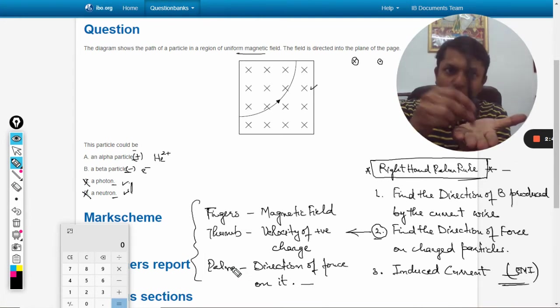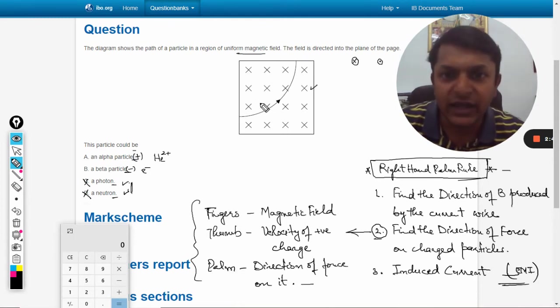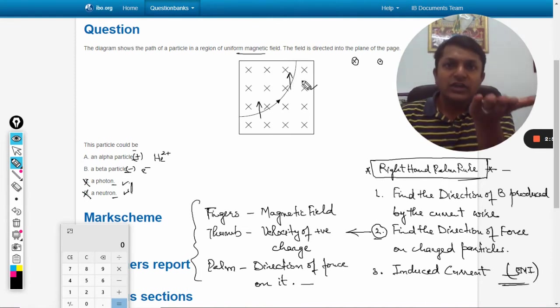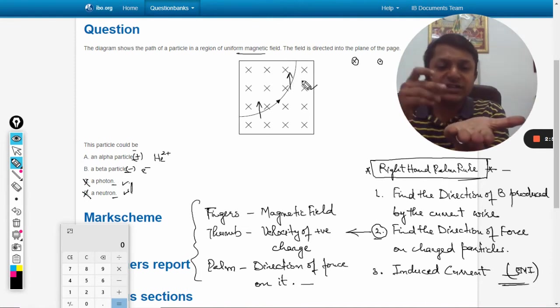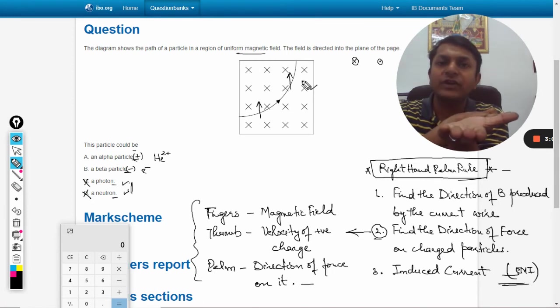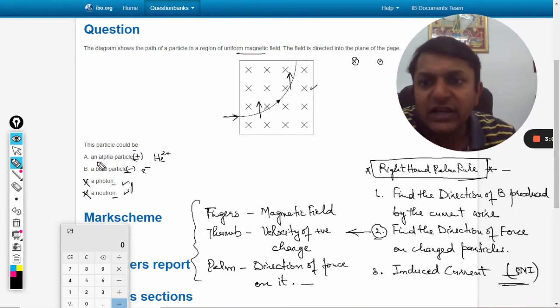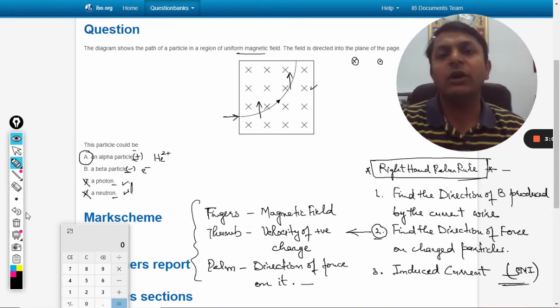It is given that the force is in the upward direction, and that is why the trajectory is moving upward. This means we must keep our hand like this because the force is in the upward direction towards the palm. This means the positive charge should be moving with this velocity vector. So we must be talking about a positive charge, which should be the correct answer.